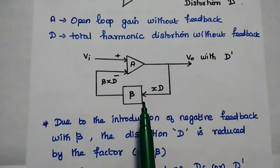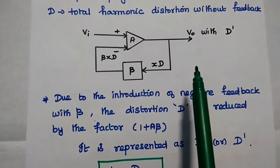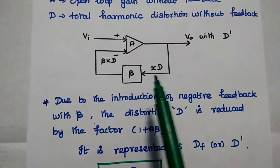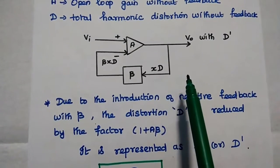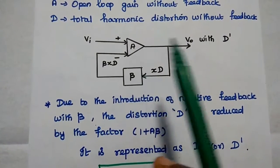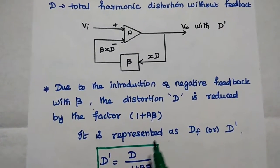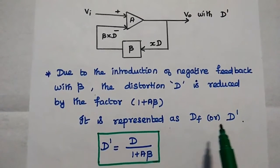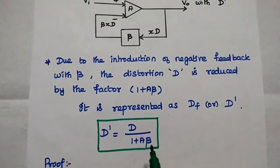Next, we introduce the negative feedback concept. Due to the introduction of negative feedback with factor beta, the gain of the feedback network, the distortion is reduced by the factor 1 plus A·beta. By introducing negative feedback to the amplifier, the distortion can be reduced by 1 plus A·beta times. The new distortion is represented as Df or D-dash, where D-dash equals D divided by (1 plus A·beta).